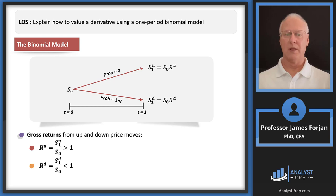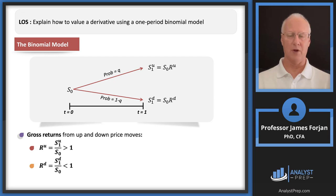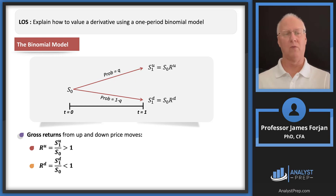We're going to compute the expected stock price with an upward and downward movement. In academic research and textbooks the notation is U and D, but this learning module uses gross returns with a superscript U for up and superscript D for down — these are just one plus the rate of return. So in my example, 110 means a gross return of 1.1, and 90 dollars means an R superscript D of 0.9.